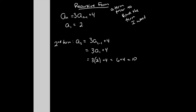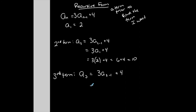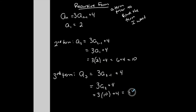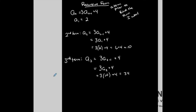Let me do the third term. a₃: replace all n's with three — be careful with the subscripts. This says three times a₂ plus four. Well, a₂ represents the second term, which I just determined was ten. So three times ten plus four is thirty plus four, which is thirty-four. This is the recursive form: I need a prior term — a previous term — to find the term that I want.